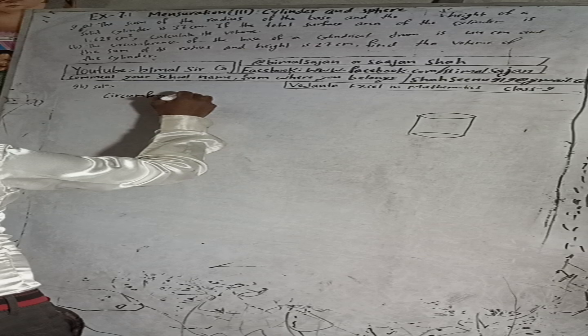Circumference of the base of cylinder is equal to 44 cm, and the formula for circumference is 2πr. So 2πr equals 44.